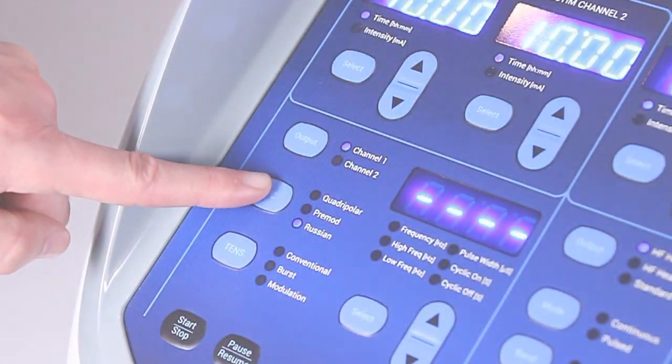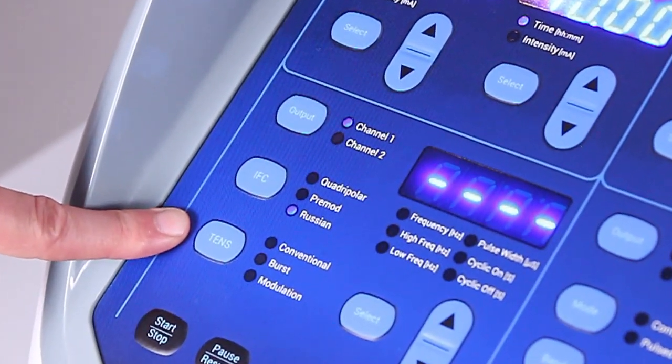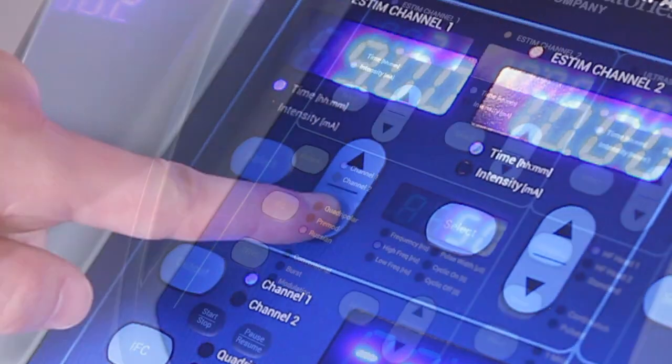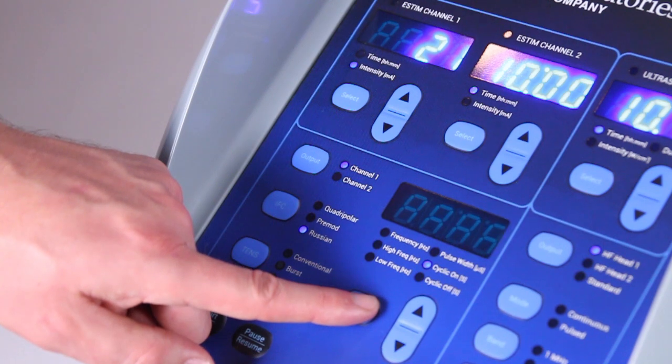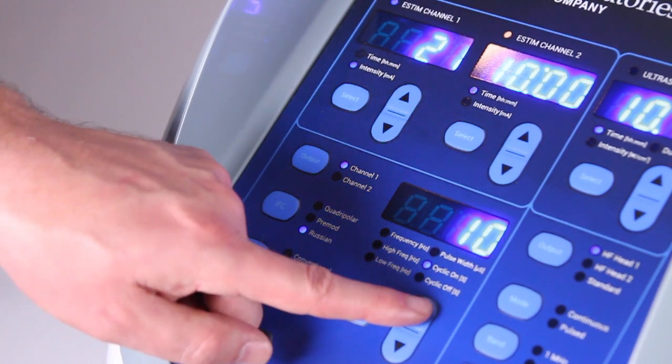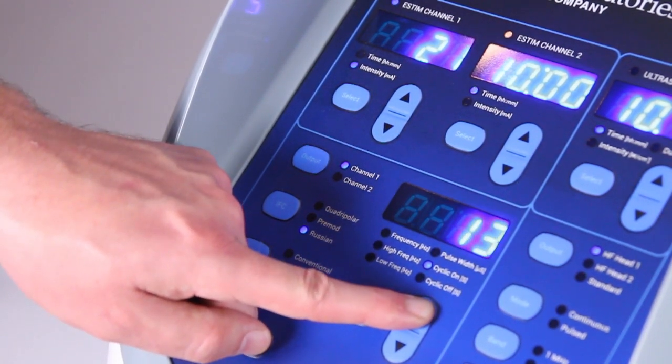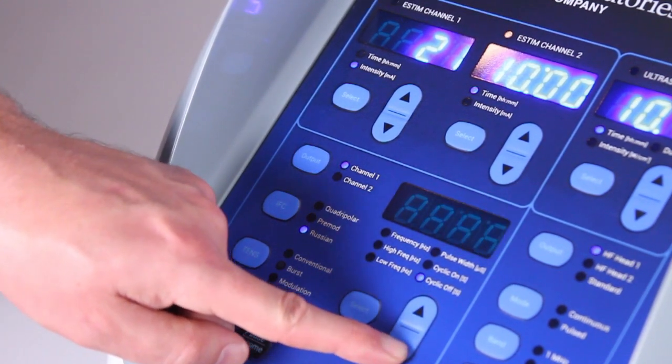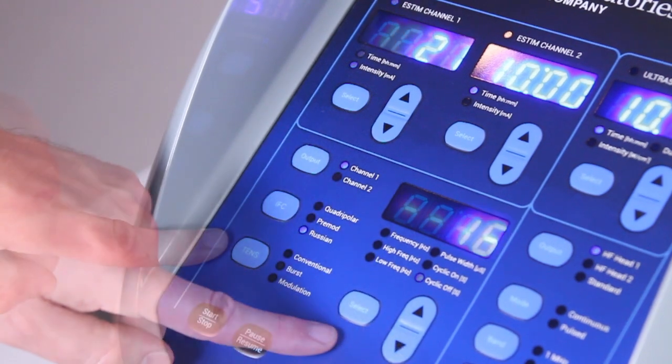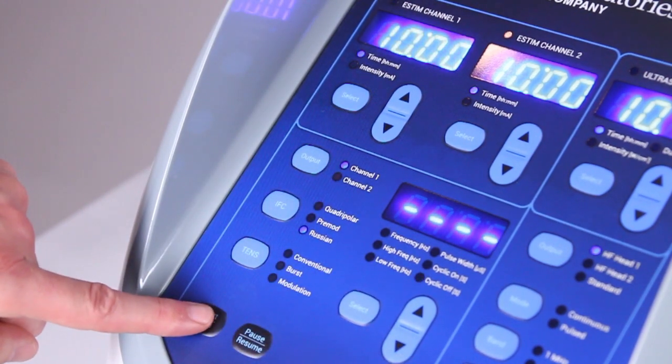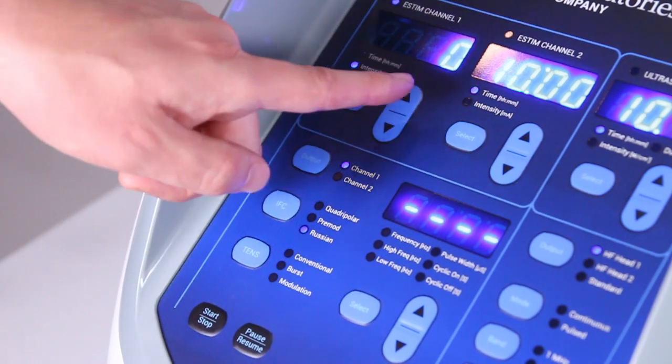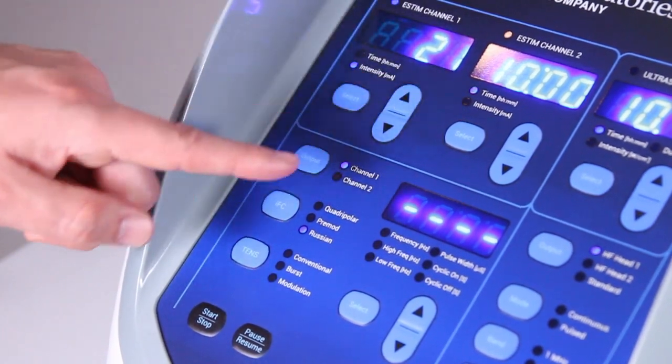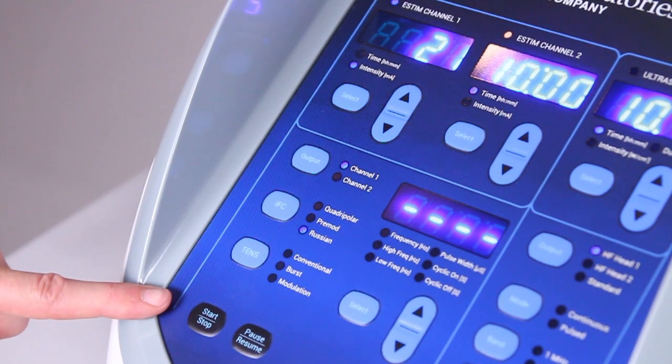Press the IFC button again to select Russian. Use the up and down arrows to set the time. Now use the select button in the center to select cyclic on and choose from 0 to 30 seconds. Press the select button again to choose cyclic off and set your time in the same way. Press start stop to begin the treatment. Use the arrows above to set the treatment intensity. Russian may be used on channel one and channel two with different settings at the same time.